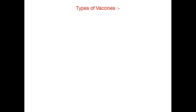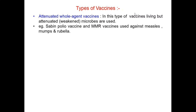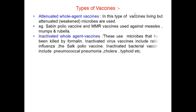Now let us discuss types of vaccines. First is attenuated whole agent vaccines. In this type of vaccine, living but attenuated or weakened microbes are used. For example, oral polio vaccine and MMR vaccines used against measles, mumps and rubella diseases. Then inactivated whole agent vaccines: these use microbes killed by formalin. Inactivated virus vaccines include rabies, influenza, and the Salk polio vaccine.